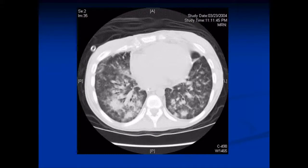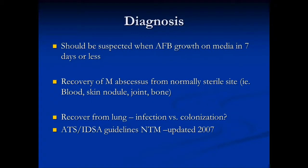A CT scan shows multiple pulmonary nodules, bronchiectasis, and diffuse findings. As far as diagnosis, M. abscessus should be suspected when AFB growth occurs within seven days or less, as it is a rapid grower, or anytime it is recovered from a normally sterile site such as a biopsied skin nodule, bone, or joint. When recovered from a pulmonary specimen, the challenge is deciphering infection versus colonization.